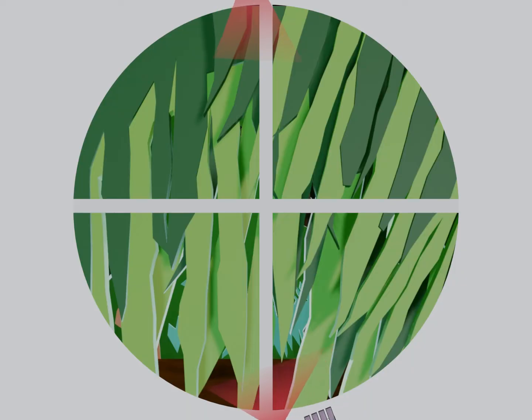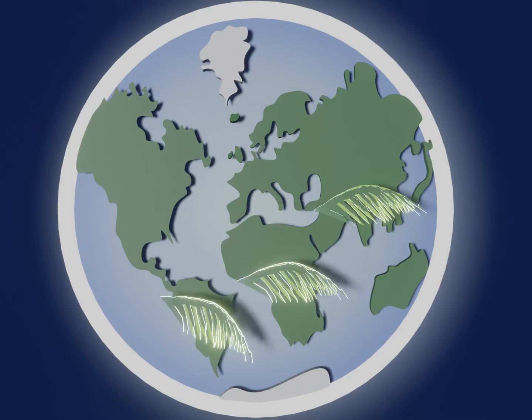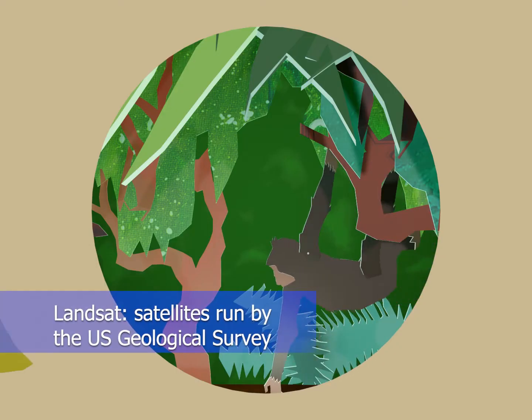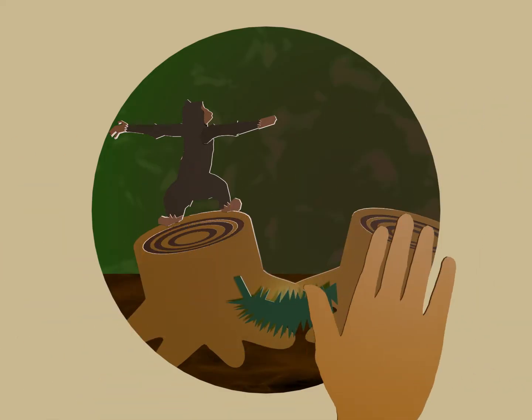We'll start with the rainforest. In order for it to act like a sink, it needs lots of well-hydrated trees. Right now, though, Landsat satellites show it's being cut down at the rate of one football field every second. And there's more.